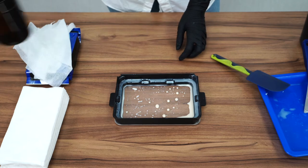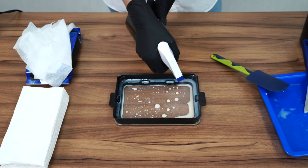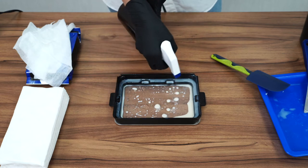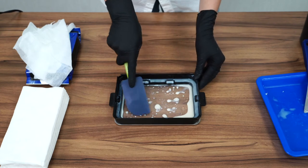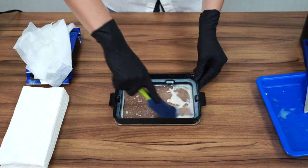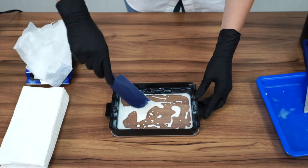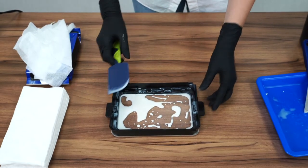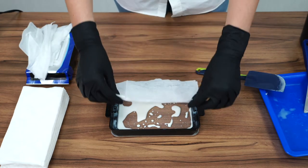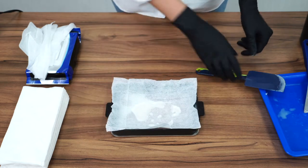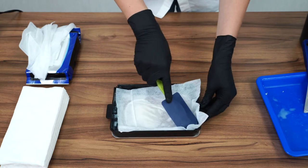So our first step is going to be taking alcohol and spraying it generously inside the vat. Then I take a rubber spatula and mix the whole thing together. In my next step, I'm going to take an alcohol wipe, place this on top of the vat, and push it into the corners of my vat here.